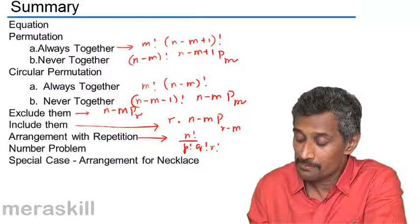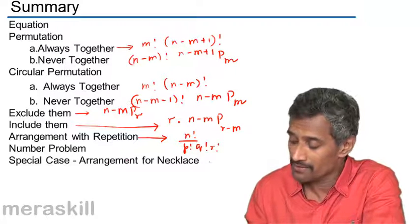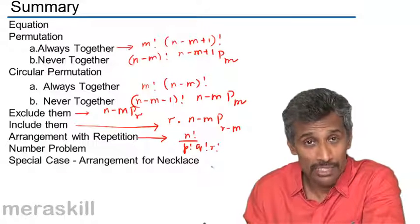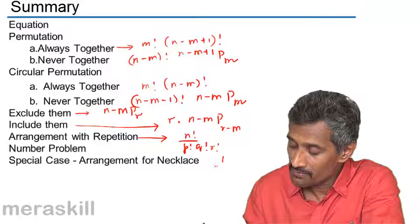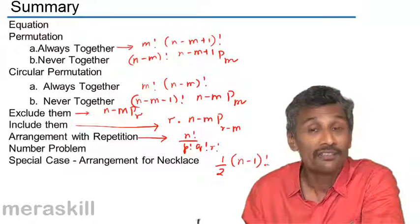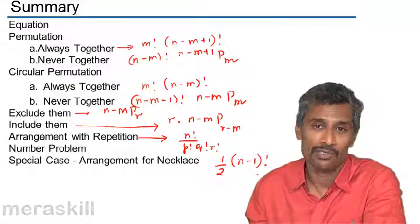Then we did special case of arrangement for necklace, circular necklace, where the clockwise and anticlockwise arrangements both amount to the same, so you are going to have half into n minus 1 factorial arrangement that are possible.